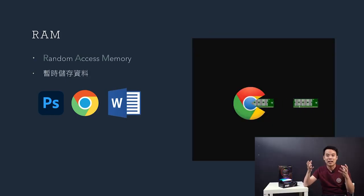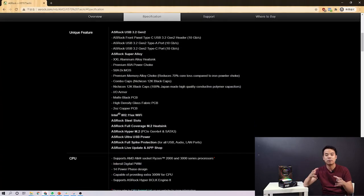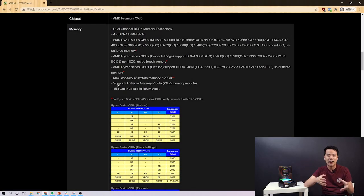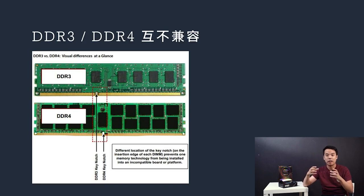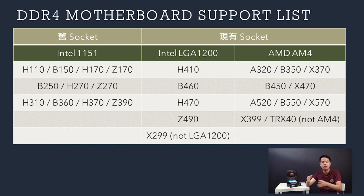First of all, let's look at the bottom of the RAM. The bottom of the stick will be written with DDR3 or DDR4. DDR3 and DDR4 are not the same — they are not compatible. Currently, all AMD and Intel motherboards only support DDR4.